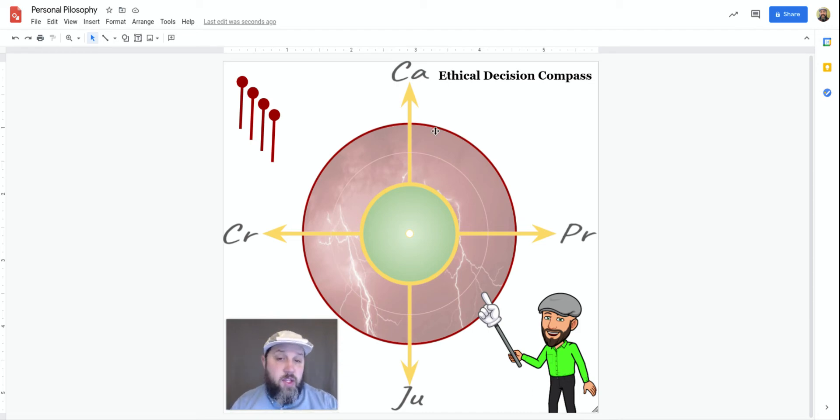So the way that you would use this compass is there are four points, and we have ethic of critique, ethic of care, ethic of profession, and ethic of justice.